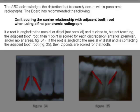The board has recommended the following: omit scoring the canine relationship with adjacent tooth root when using a final panoramic radiograph. If a root is angled to the mesial or distal, not parallel, and is close to but not touching the adjacent tooth root, then one point is scored for each discrepancy in the anterior, premolar, and/or molar areas. If the root is angled and is contacting the adjacent root, then two points are scored for that tooth.